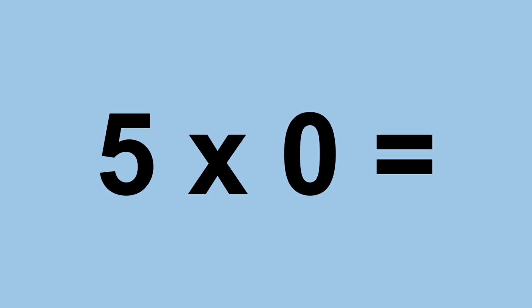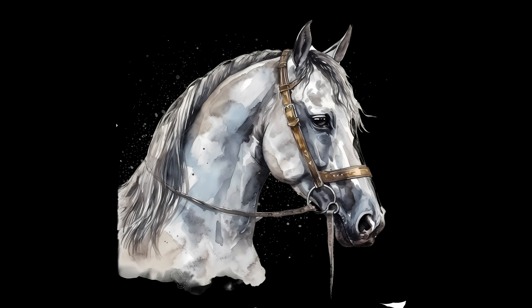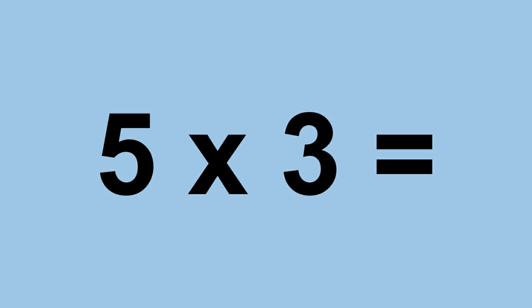5 times 0 equals 0. 5 times 1 equals 5. 5 times 2 equals 5. 5 times 3 equals 15.